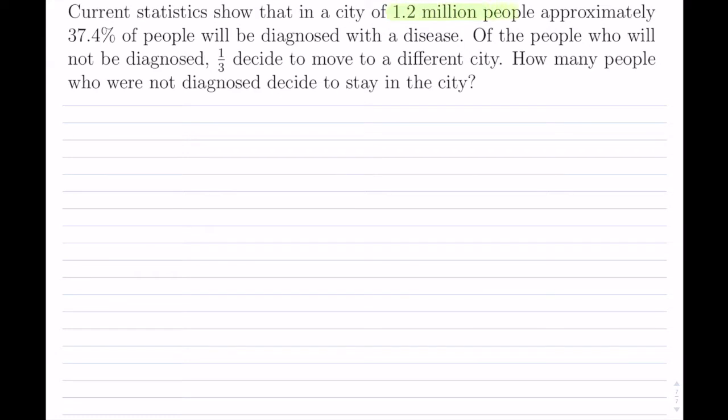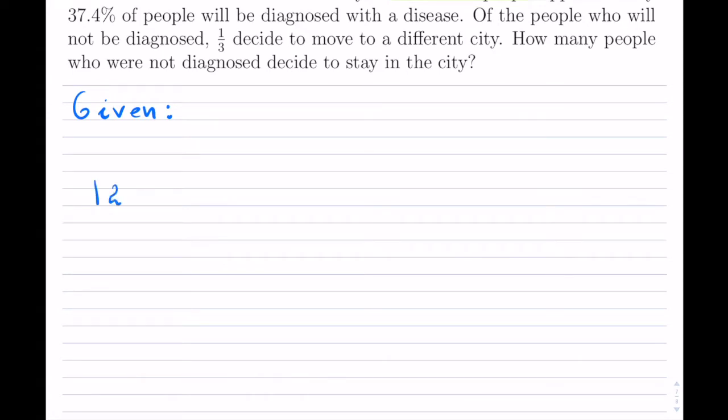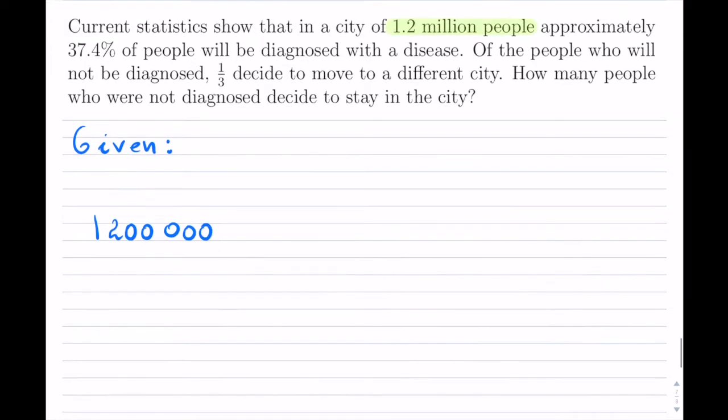We need the total number of people. That's 1.2 million. I'll write this down as we go along. Given, we have 1.2 million. I'm going to write it in this way. Approximately 37.4% are diagnosed with a disease. Branching off, 0.374. So I'm turning percent into decimal. So that's how many are diagnosed with a disease.